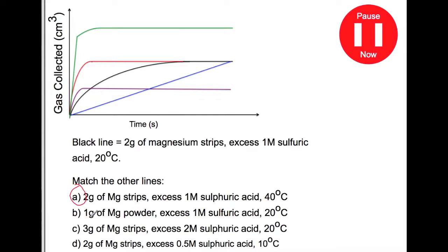The next line here, 1 gram of magnesium powder with excess 1M sulfuric acid at 20 degrees. So again similar conditions, the only thing we've changed is we've made the magnesium as a powder and we've halved how much there is there so it's going to go faster but it's going to produce half as much gas so this one will be our purple line here.